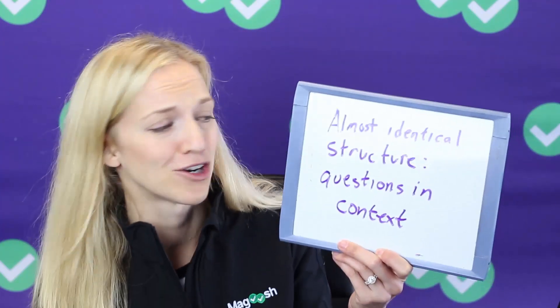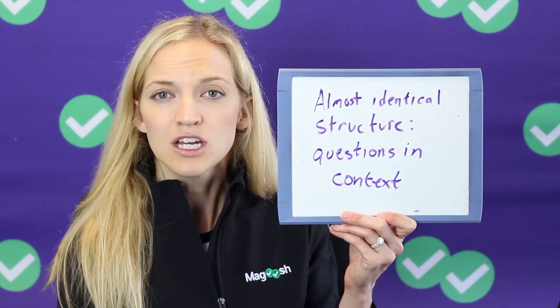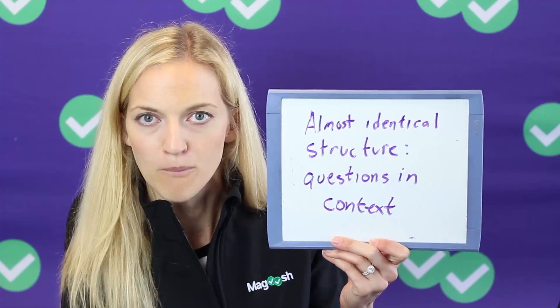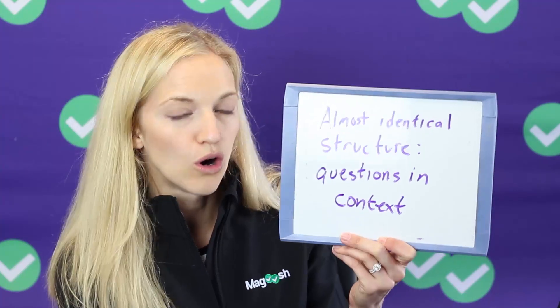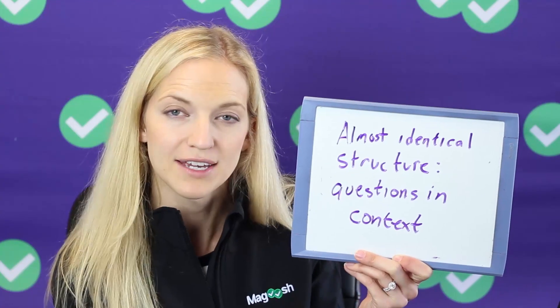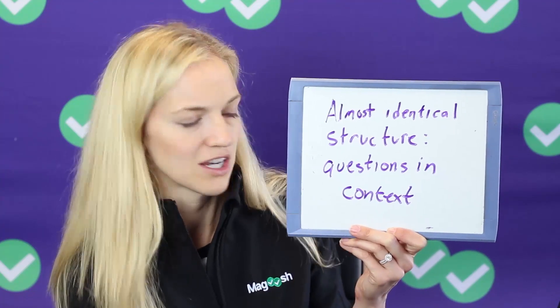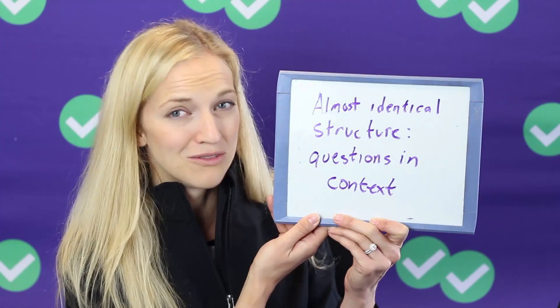They're basically the same thing — they just have different names. Now with the new SAT, you'll find that they are the most alike. In fact, they look almost identical in terms of structure. The ACT has always given students questions in context, like a draft that you're editing — fixing grammar mistakes, switching out an idea for a more specific idea as you go through a passage. The SAT used to have isolated questions, but now they're all within the context of a passage, just like the ACT.